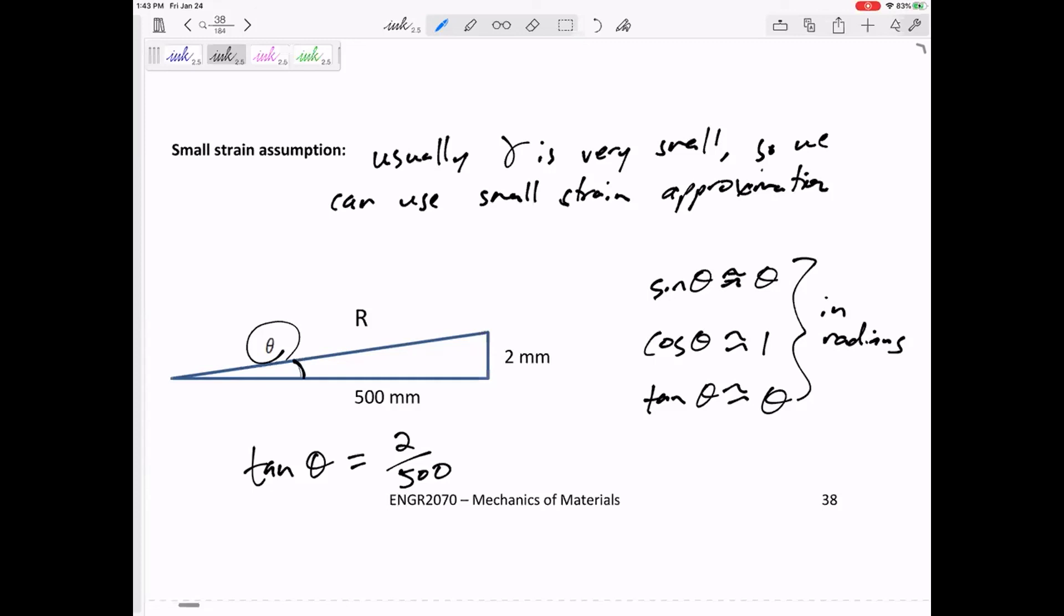What does that mean? It's very, very nice and very convenient. That means that angle in radians is 2 over 500.